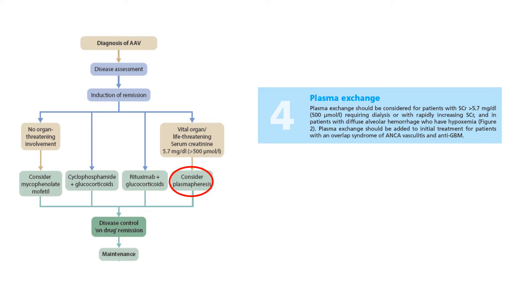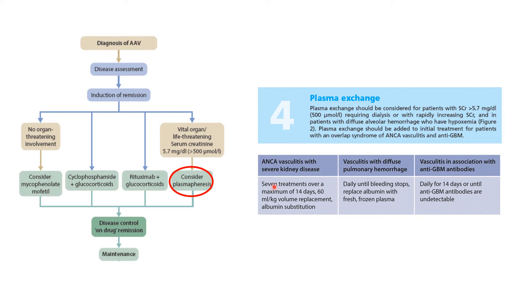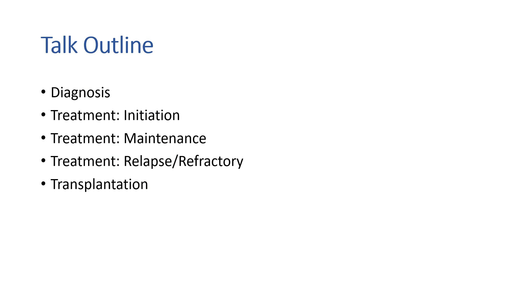Regarding plasmapheresis: consider it when serum creatinine is above 5.7, the patient requires dialysis, creatinine is rapidly increasing, or in diffuse alveolar hemorrhage with hypoxemia. For severe ANCA vasculitis, perform seven treatments of plasma exchange over a maximum of 14 days — one treatment every other day — with 60 ml/kg volume replacement using albumin substitution. For diffuse pulmonary hemorrhage, perform daily treatments until bleeding stops, replacing albumin with fresh frozen plasma. If vasculitis is associated with anti-GBM antibodies, perform daily plasma exchange for 14 days or until anti-GBM antibodies are undetectable.